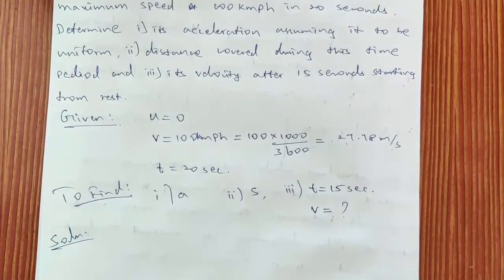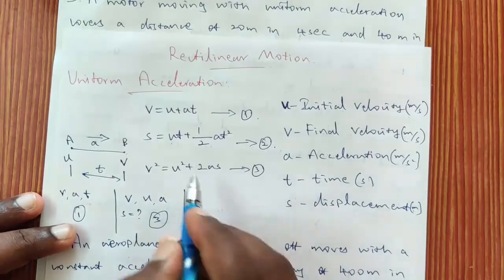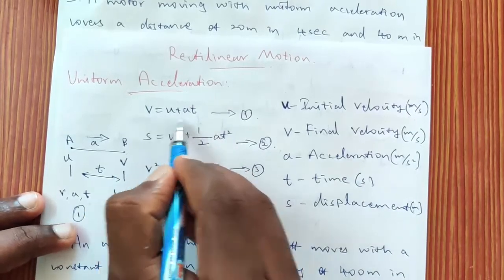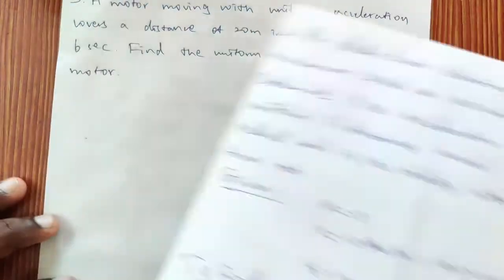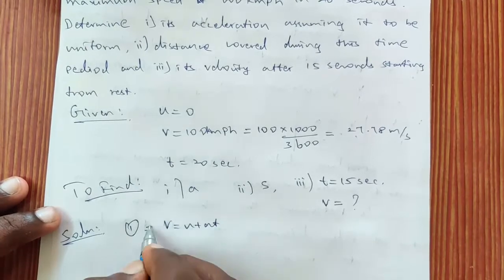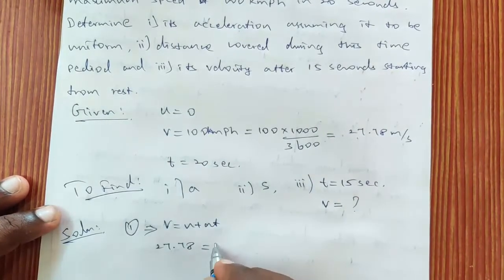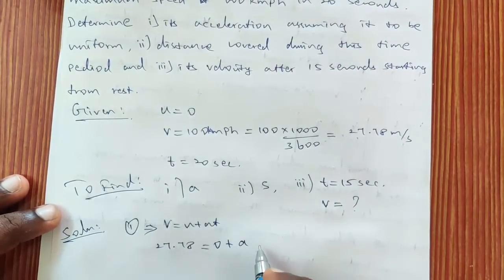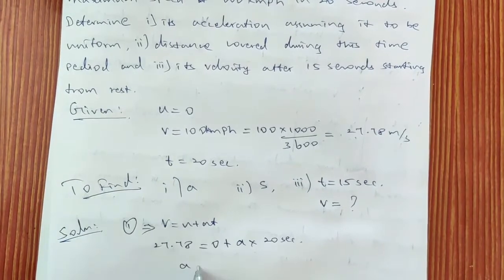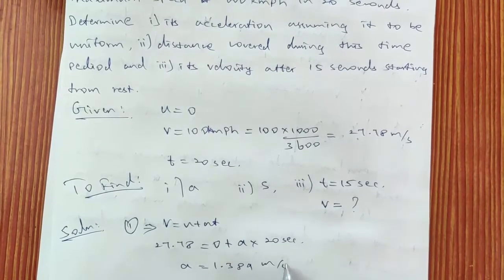For part 1, a is the unknown and we have u, v and t. Using equation 1: v = u + at, a is the only unknown. Substituting: 27.78 = 0 + a × 20. Solving gives a = 1.389 m/s².